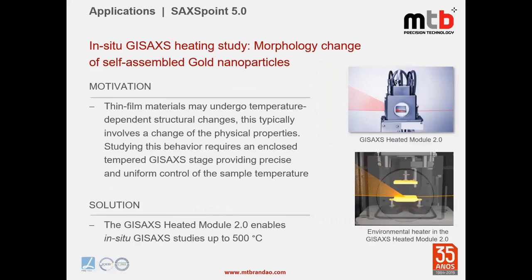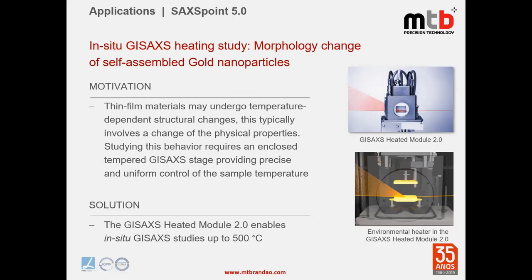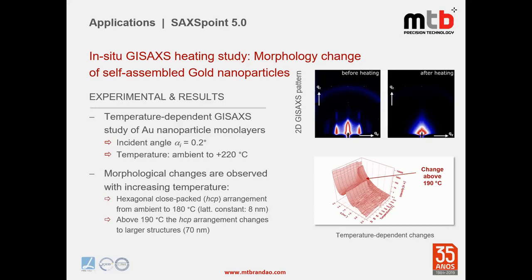It is also possible to study morphology changes of self-assembled gold nanoparticles using a temperature-dependent GI-SAXS study. With an incident angle of 0.2° and temperatures up to 220°C, morphology transitions were observed. A hexagonal close-packed arrangement with a lattice constant of 8 nm was observed from ambient temperature up to 180°C. Above 190°C, the hexagonal close-packed arrangement changed to a larger structure of 17 nm.